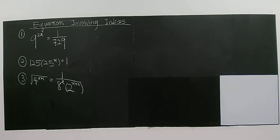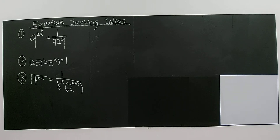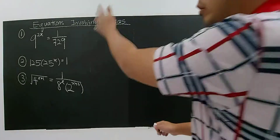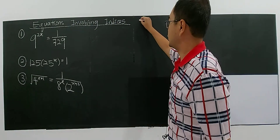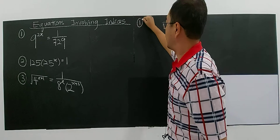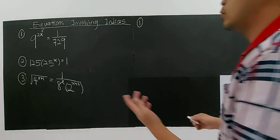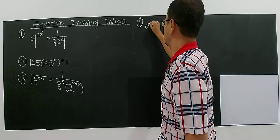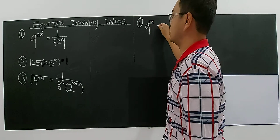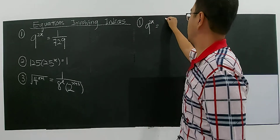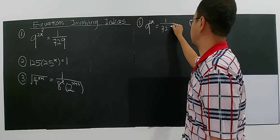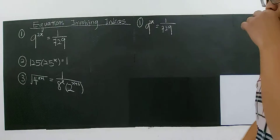This is the indices that involve having the same base. I'm going to do three questions for you so that you will see what technique is required. So question 1: 9 to the power of 2x equals 1 over 729.